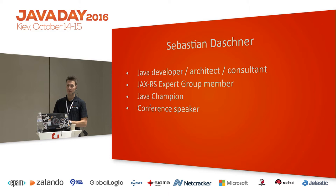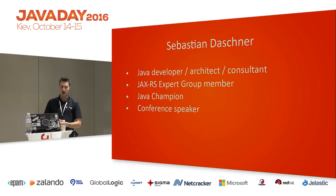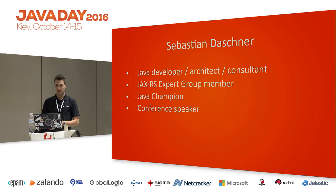A little bit about myself. I'm a freelancer based in Munich, Germany — a Java developer, consultant, architect, whatever you call it. I'm participating in the JCP, so I'm a so-called JAX-RS expert group member. I helped define the JAX-RS standard for the new Java EE 8 version. I'm also a Java Champion and a regular conference speaker. And those were all the slides I have today, because slides are boring and we want to do live coding, real stuff, and discussions.